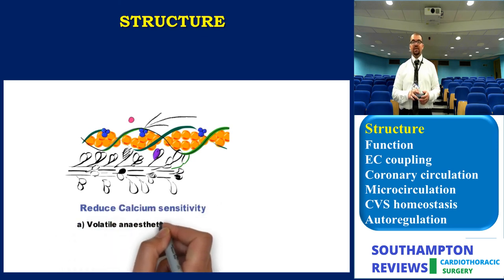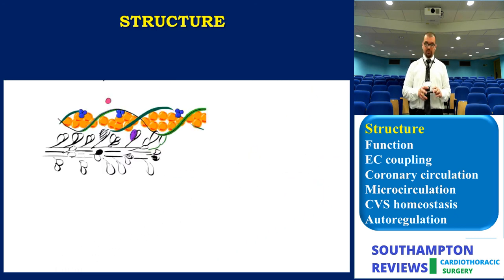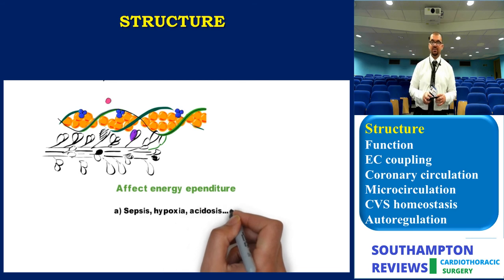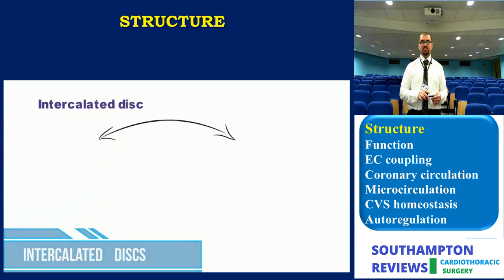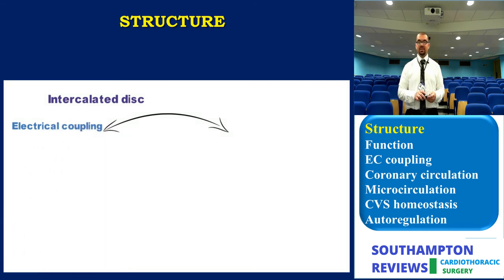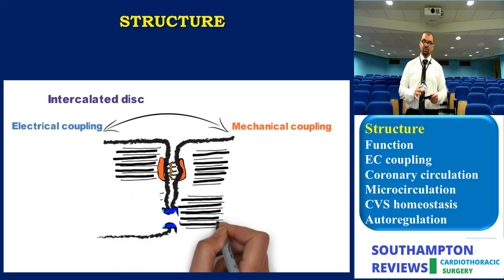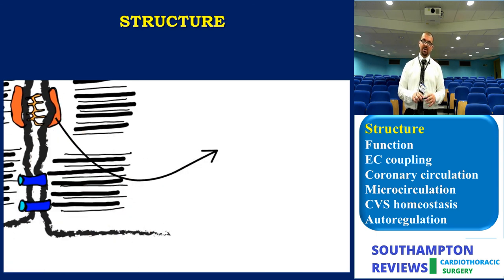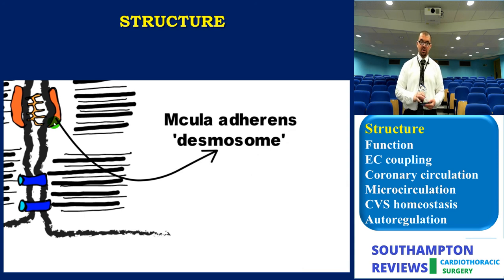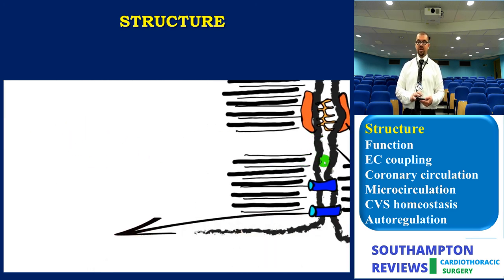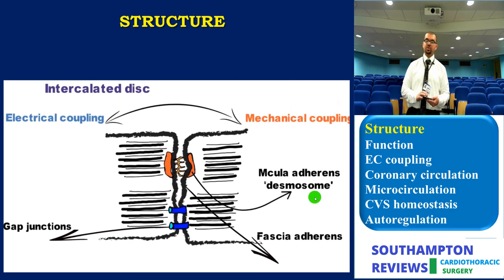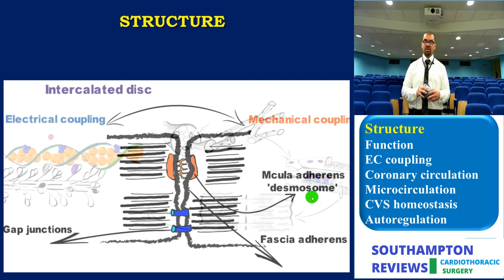Finally, we would discuss the intercalated discs. One of the postulated reasons why the RV is more vulnerable than the LV is the lesser number of myocytes, leading to fewer intercalated discs, which maintain not only electrical coupling but mechanical coupling as well. As you can see here, all myocytes are connected together via specialized connection points called intercalated discs. These discs have a mechanical coupling area denoted by the orange color — referred to as the macula adherens or desmosome. There is also the fascia adherens (the black part), which also contributes to mechanical stability.